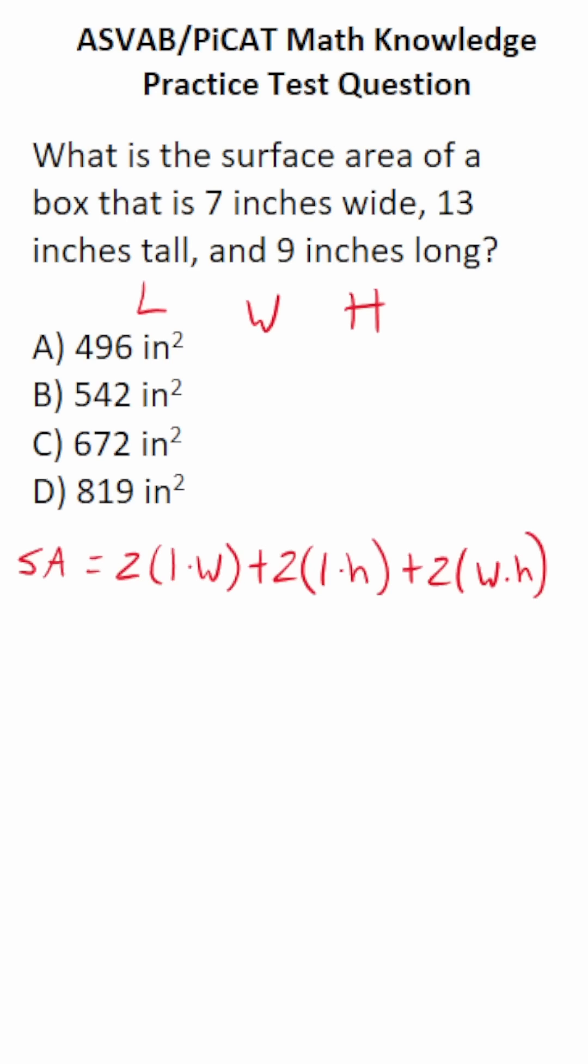Let's go back and identify each of these things. It's 7 inches wide, so W is 7. 13 inches tall, so its height is 13. And 9 inches long, so length is 9. Let's just plug things in and work this out accordingly.